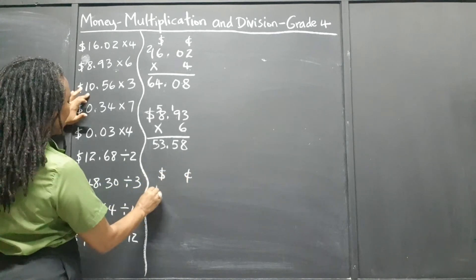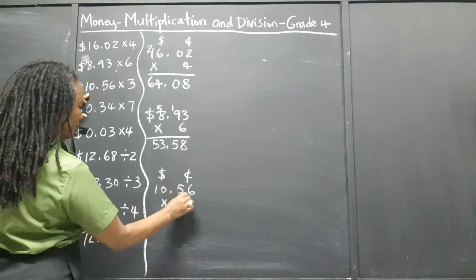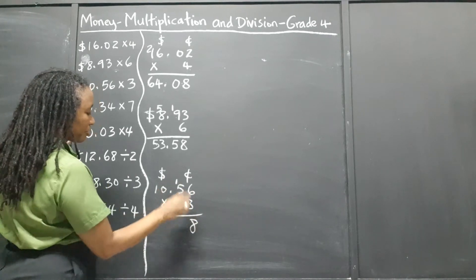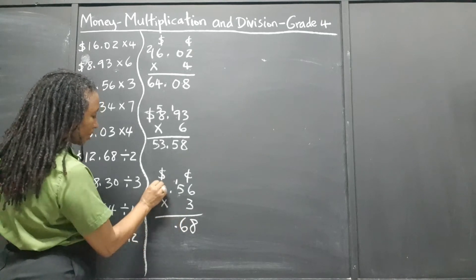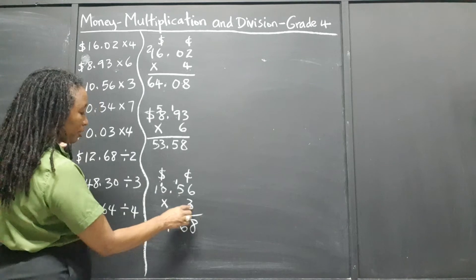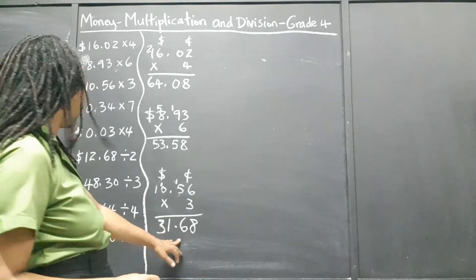$10.56 times 3. 3 times 6 is 18. 3 times 5 is 15, and 1 is 16. 3 times 0 is 0, and 1 is 1. 3 times 1 is 3. So that's $31.68.